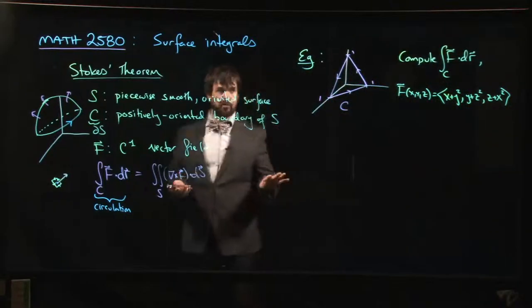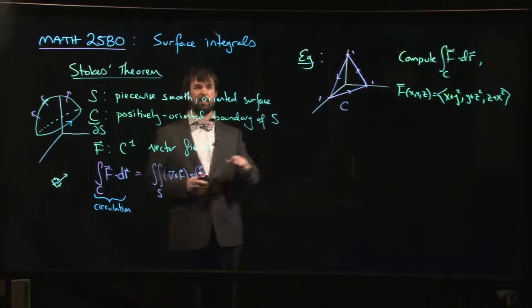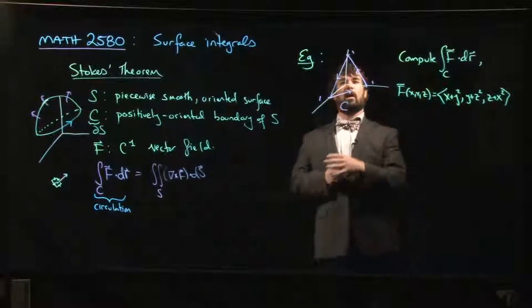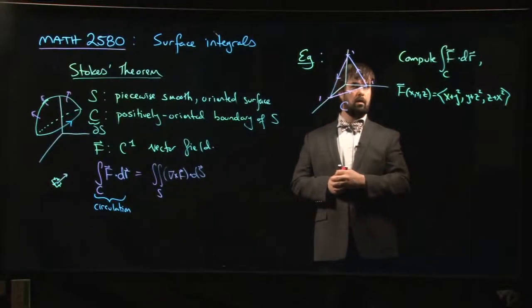All right, so I think we'll try to squeeze in two Stokes' Theorem examples. This will be the first of those two examples. So here we have a typical problem: we want to calculate the line integral around a closed path of some vector field.